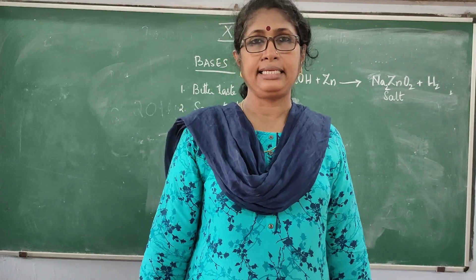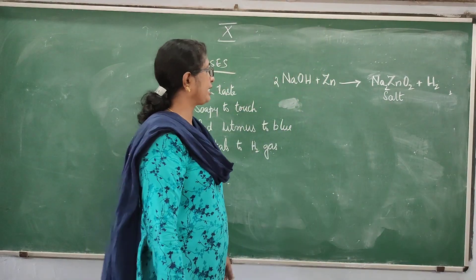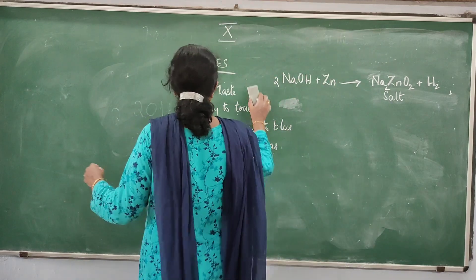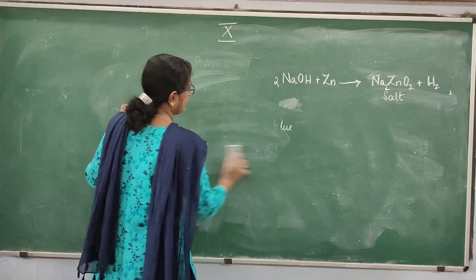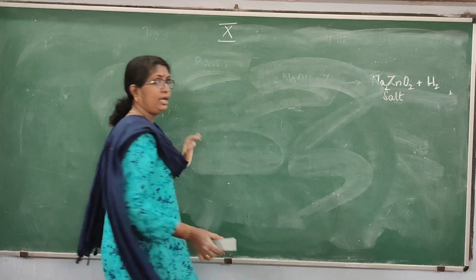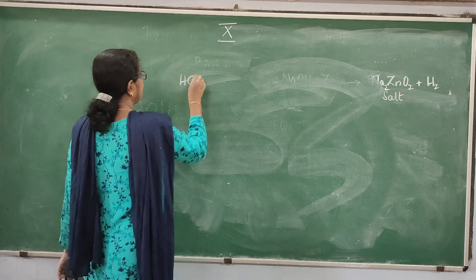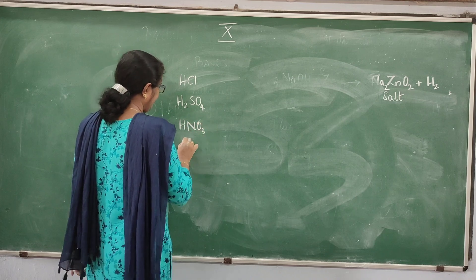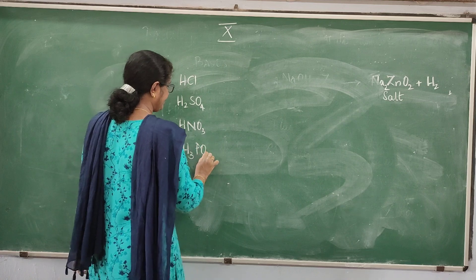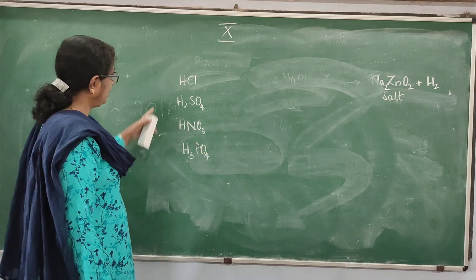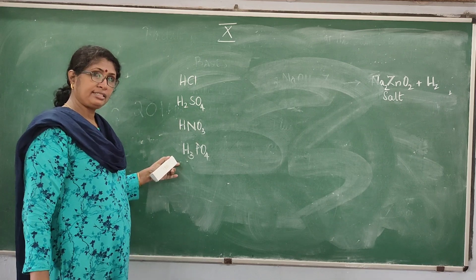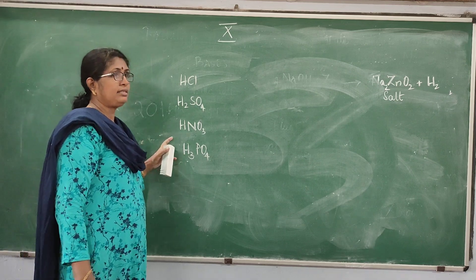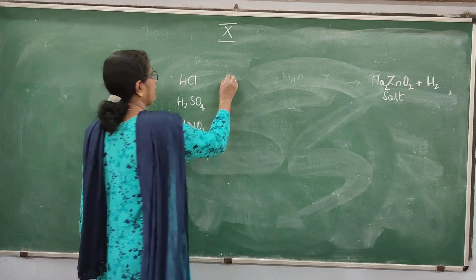Now let us look at acids. Consider HCl, H2SO4, HNO3, and H3PO4 — these are all acids. What is common in them? They all have hydrogen. All of them contain hydrogen. When these are added to water, they give hydrogen ions.